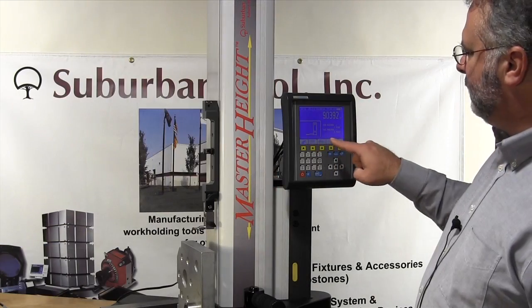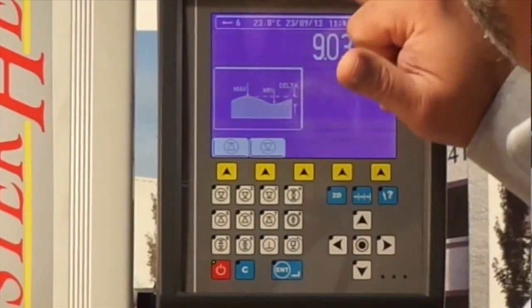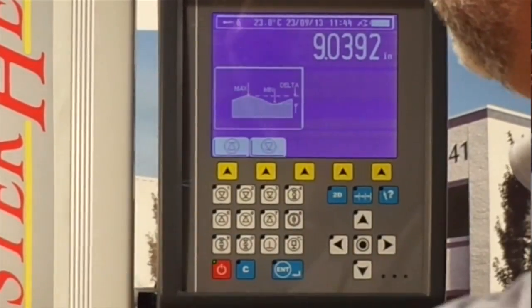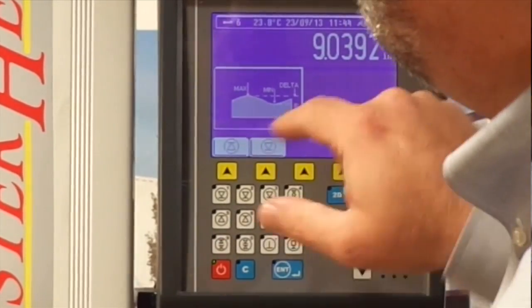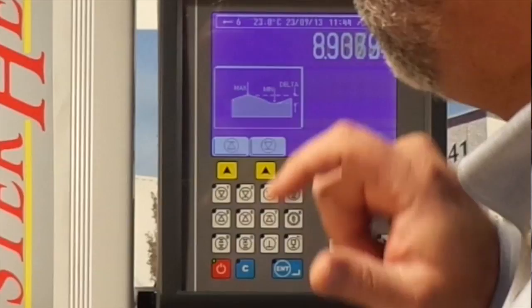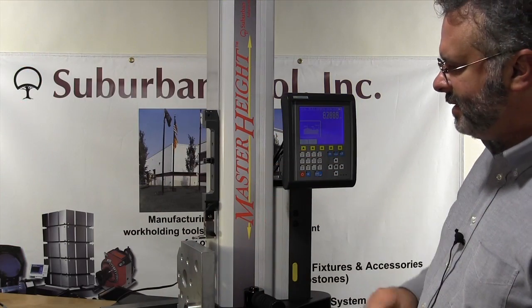Next thing we're going to do is come to the feature right here and press the button. It's going to ask us do we want to come up or do we want to come down. We want to sweep the top surface so we're going to come down. So we press that button, the probe is going to come down on the top and beep.